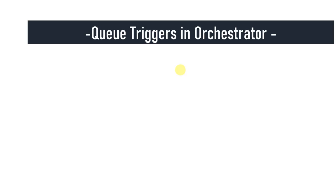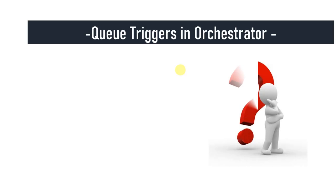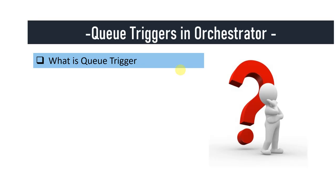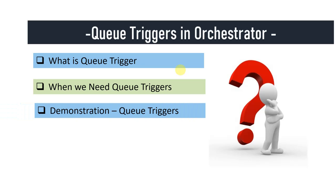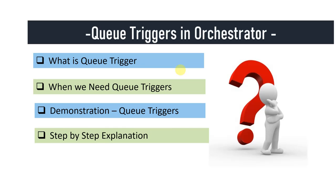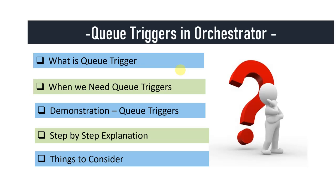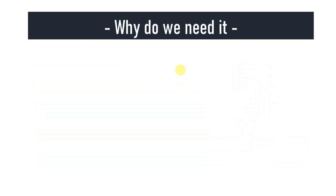Hi everyone, welcome back to the channel. Let's see our agenda for today. We are going to discuss Queue Triggers in Orchestrator — what is a Queue Trigger, why do we even need one when we already have a time-based trigger in Orchestrator, a demonstration of a Queue Trigger in working, a step-by-step explanation of how it was made, and what things to consider when implementing a Queue Trigger.